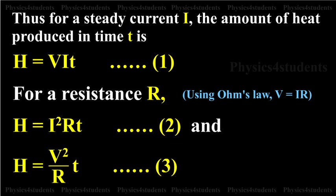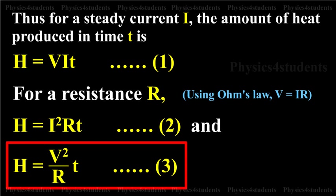It is directly proportional to the resistance R for a given I and directly proportional to the time of passage of current. Also by equation 3, the heat produced is inversely proportional to the resistance R for a given V.